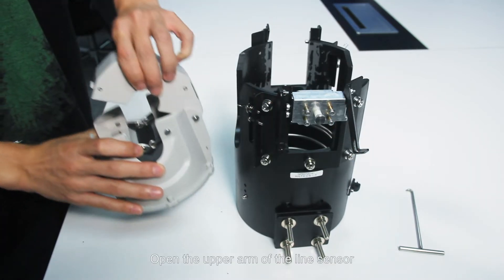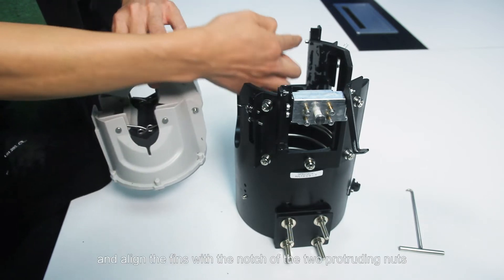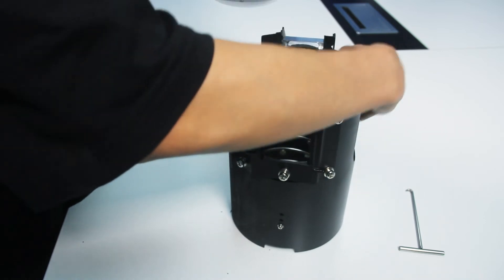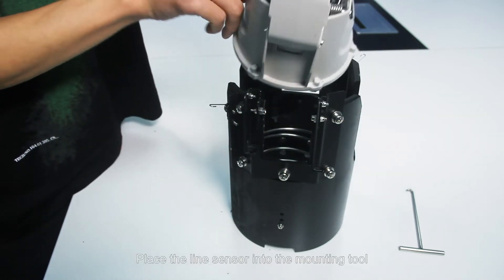Open the upper arm of the line sensor and align the fins with the notch of the two protruding nuts. Place the line sensor into the mounting tool.